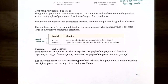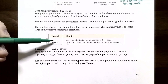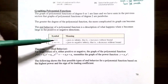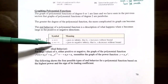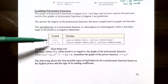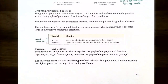We use arrow notation to describe end behavior. If x is getting very large without bound, we write x approaches positive infinity. If x approaches negative infinity, the x values decrease without bound, becoming more and more negative. This is shorthand for what happens when x gets very large or very negative.